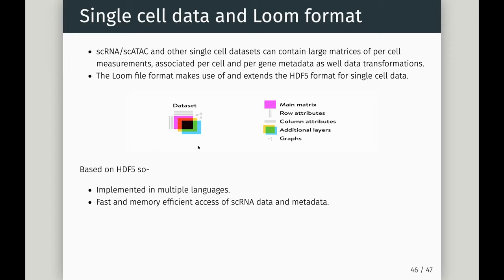HDF5 allows all this single-cell data — counts matrix, data transformations, t-SNE coordinates — to be put into one object. In Python, the loompy consortium created Loom files, which extend HDF5 specifically for single-cell data. They have the main counts matrix, row attributes (gene info), column attributes (cell info), and usefully also allow attaching graphs like the t-SNE coordinates that Connie showed. This gives fantastic benefits: implemented in multiple languages, so you can use Loom as an intermediate between Python and R.